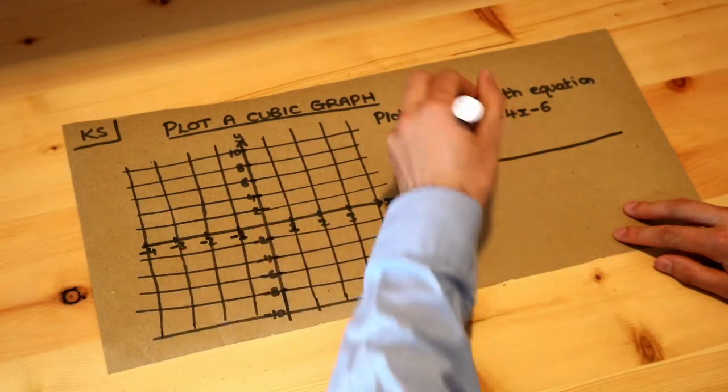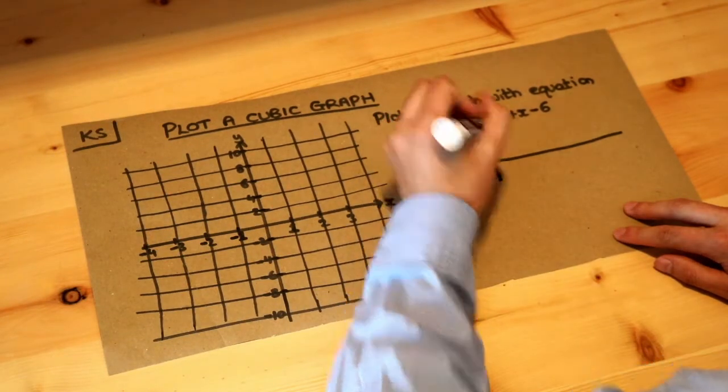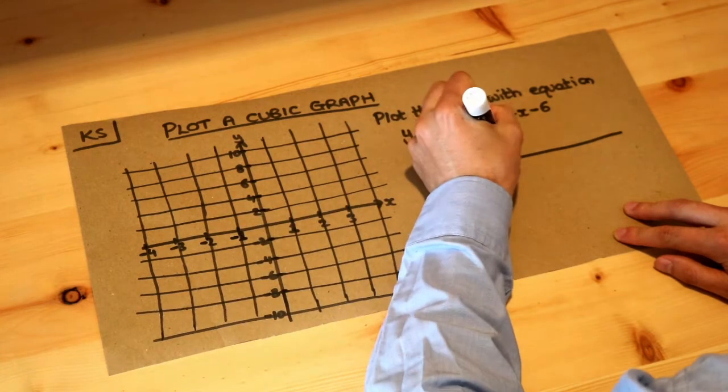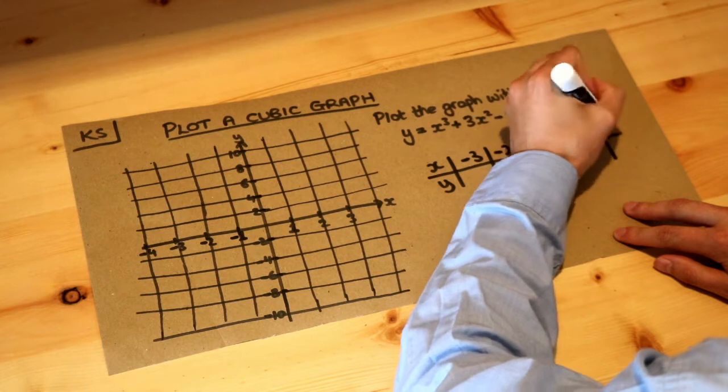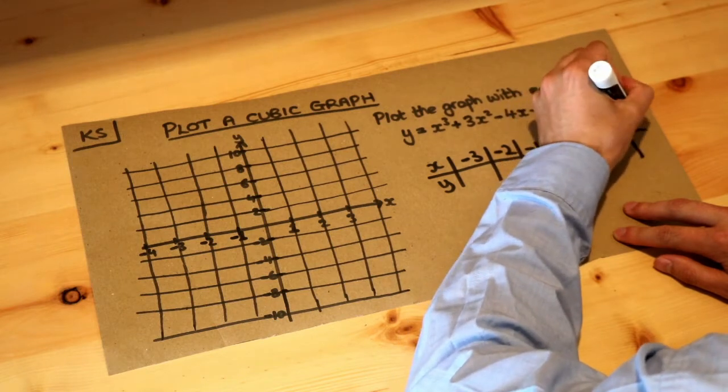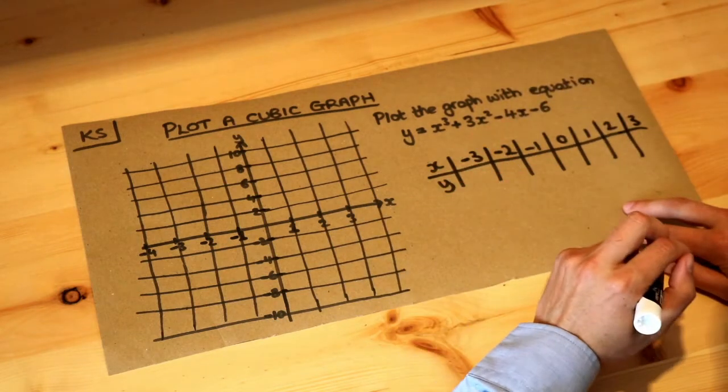So let's say our x value starts from minus 3, and then we're also going to work out y when x is minus 2, minus 1, 0, 1, 2, 3, and then we'll plot each of those points and then look at the shape that we get.